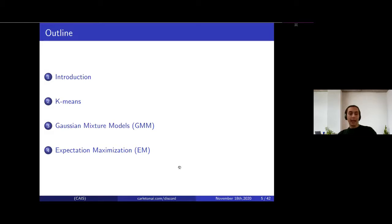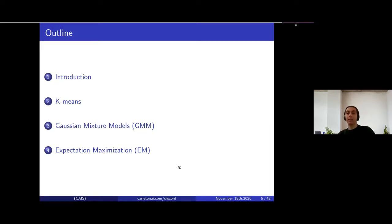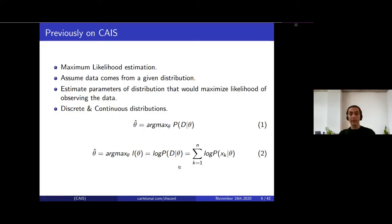Today we're going to start by defining what clustering is, then talk about unsupervised learning. From there we'll discuss the most famous clustering algorithm, k-means, and after that we'll discuss Gaussian mixture models, which can be thought of as a generalization of k-means but is much stronger. Then we'll introduce an algorithm called expectation maximization, which we can use to estimate the parameters of GMMs.